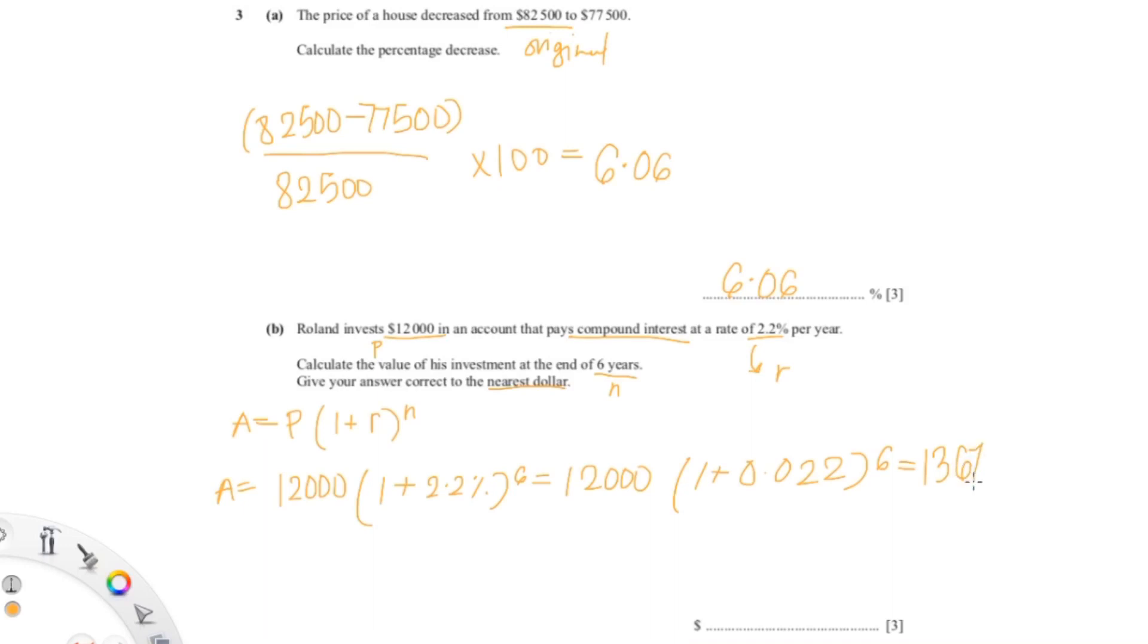You'll get a value of 13,673.71. Because they're asking for nearest dollar, you don't want it to be in decimal, so you just round it up. So it'll be 13,674, and that's your final answer.